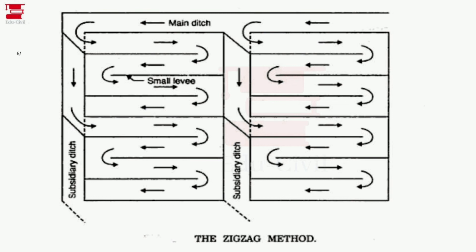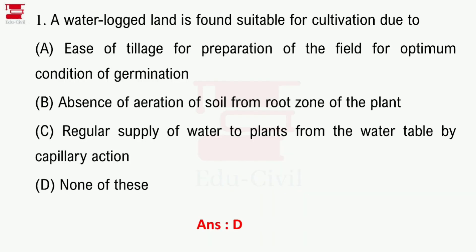Question 1: A water-logged land is found suitable for cultivation due to which reason? Options include: the use of tillage for optimum germination condition, the absence of aeration of soil, the regular supply of water to plants from the water table by capillary action, or none of these. The answer is option D — none of these.